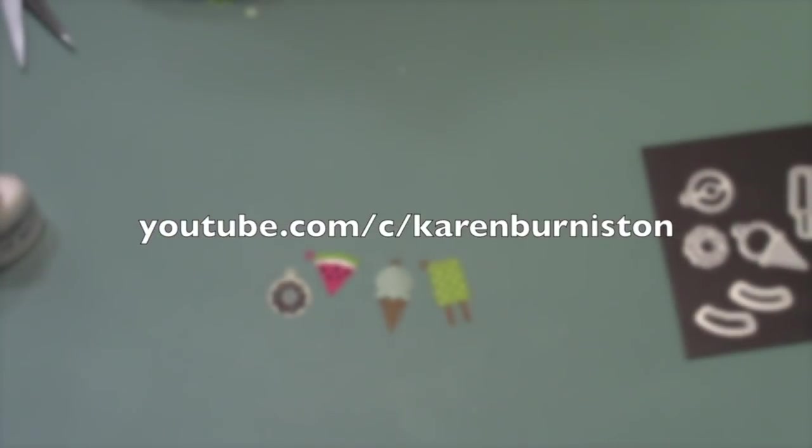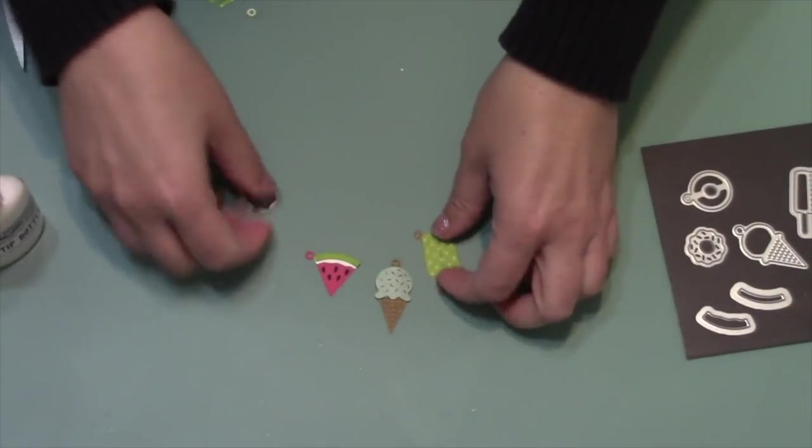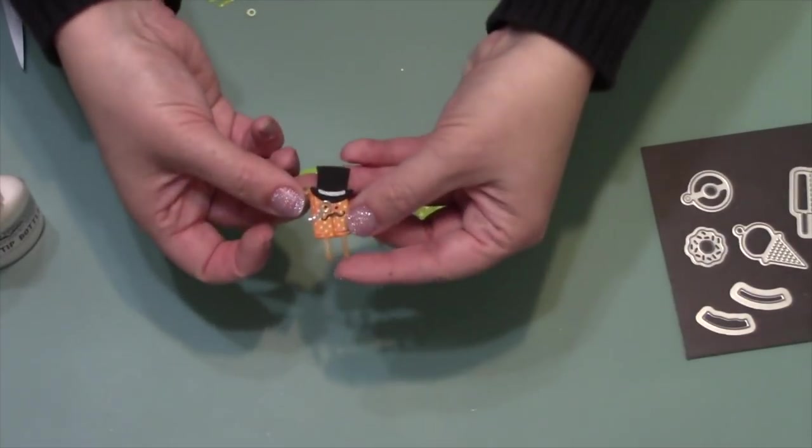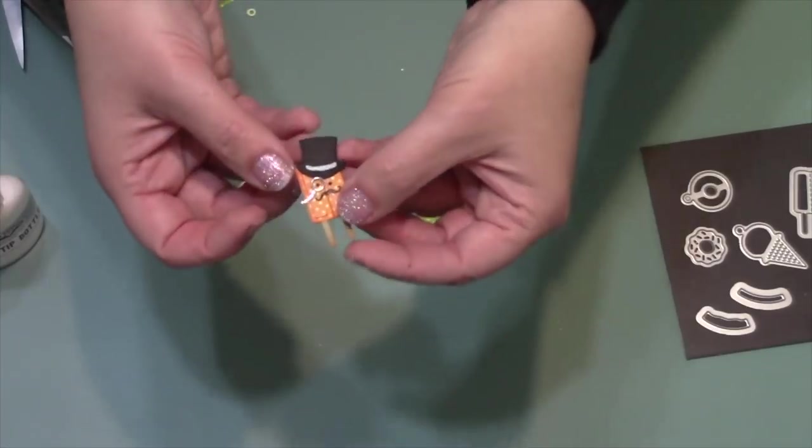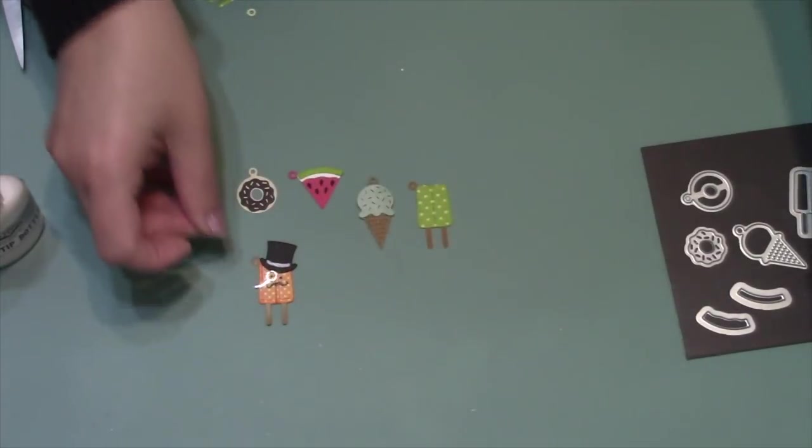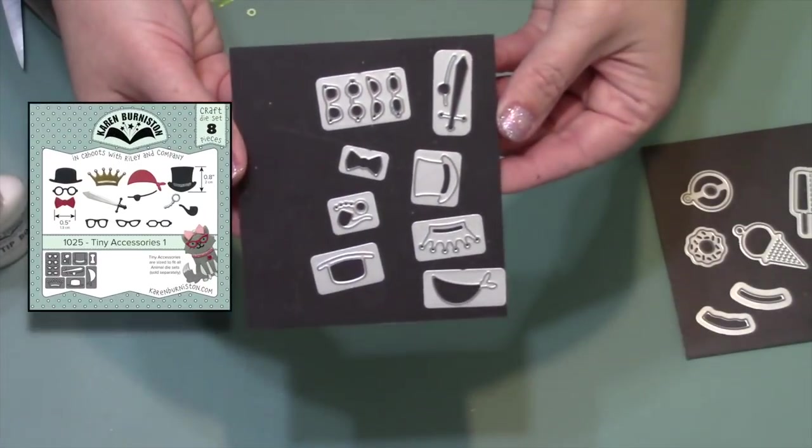Before I accessorize those Sweet Treats charms, let me show you another set that I've already made for the project. I made a popsicle and put a monocle and a top hat, then just drew in the eyes and the mustache.